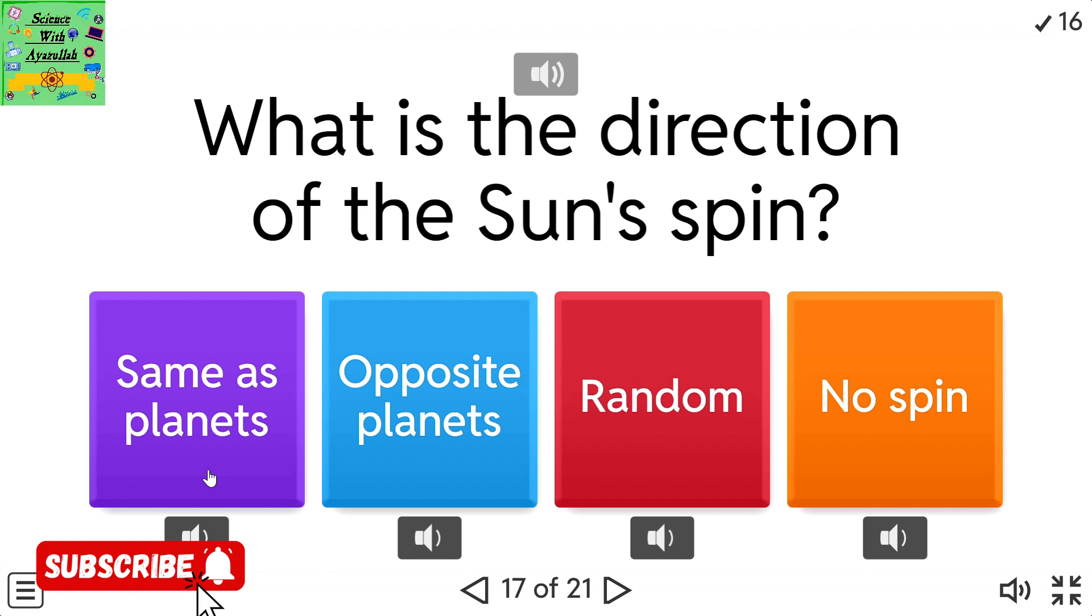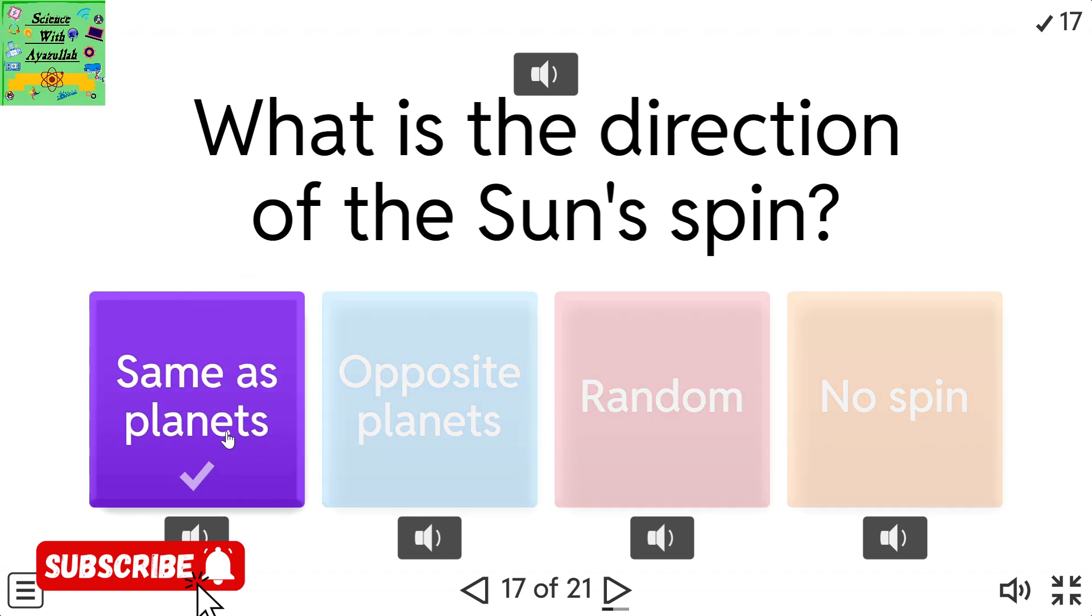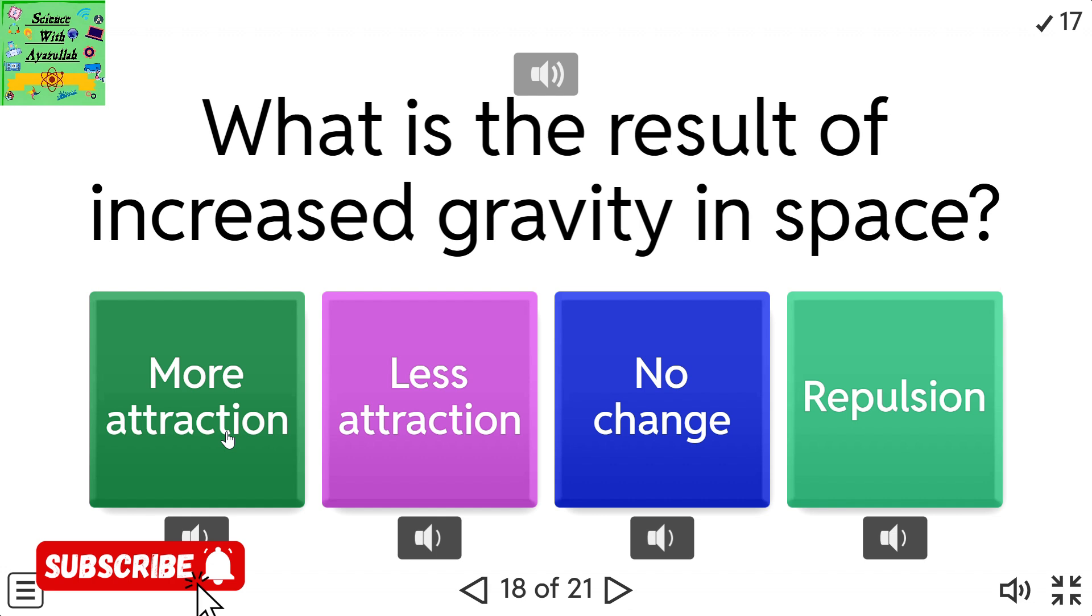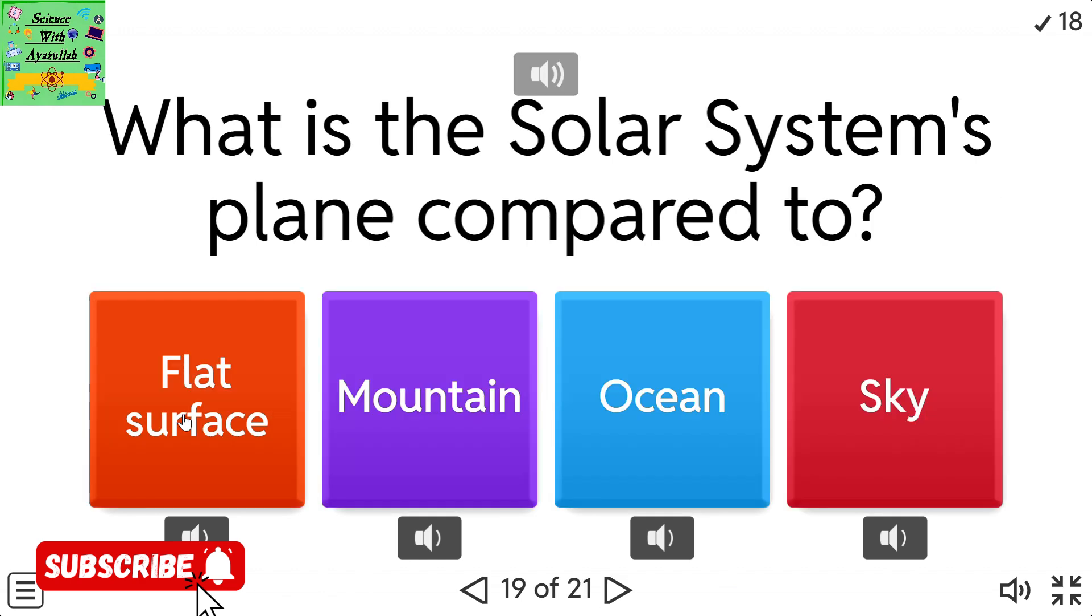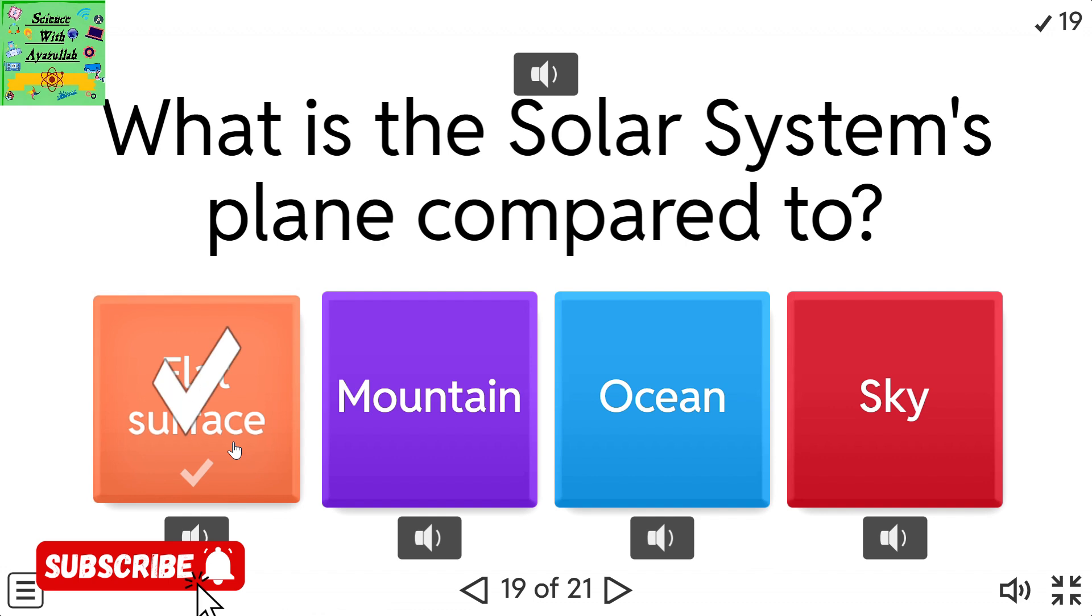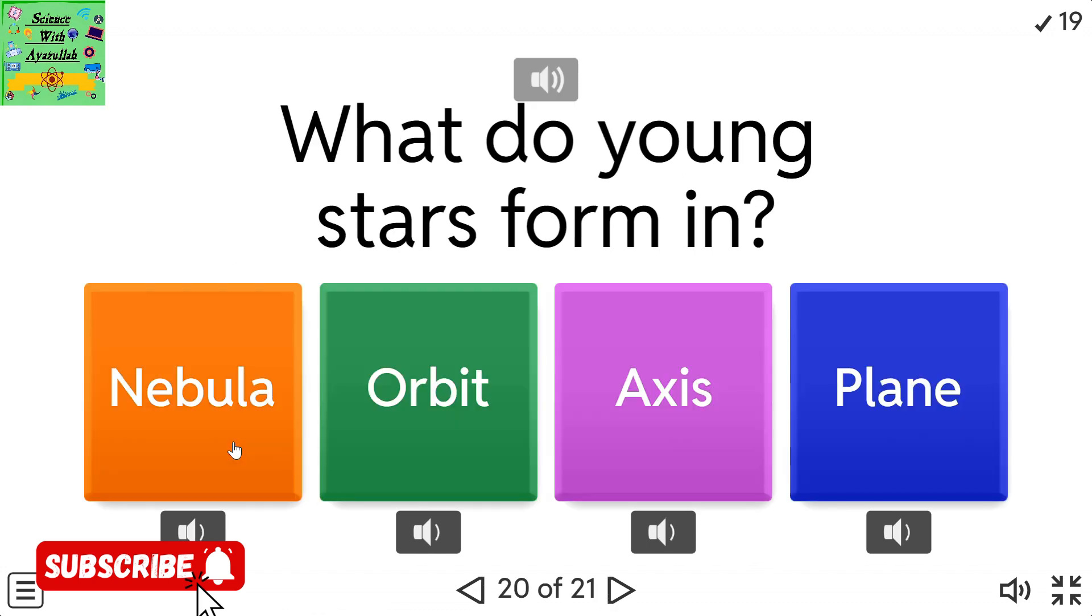What is the direction of the sun's spin? Same as planets, Random, Opposite planets, or No spin. What is the result of increased gravity in space? More attraction, Less attraction, No change, or Repulsion. What is the solar system's plane compared to? Flat surface, Mountain, Ocean, or Sky. What do young stars form in? Nebula, Orbit, Axis, or Plane.